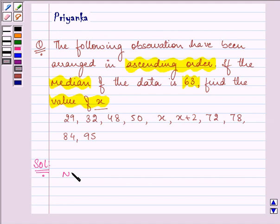First of all, we need to note down the number of observations. Here, the number of observations is 10, which means this is an even number.